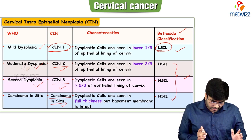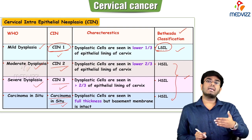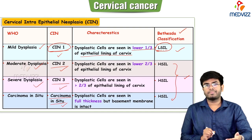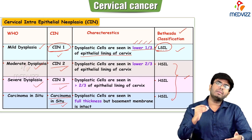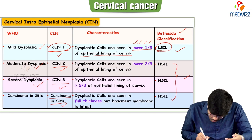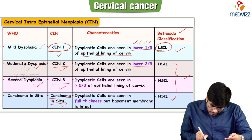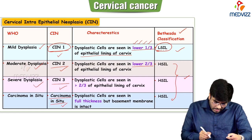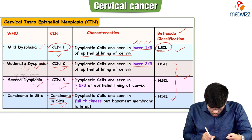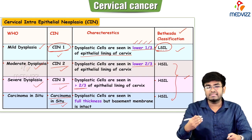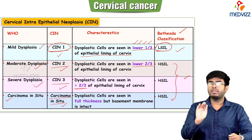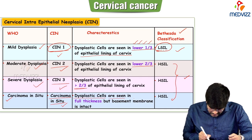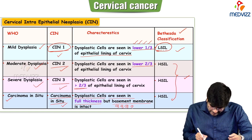In CIN3, the dysplastic cells are seen in more than two-thirds of the epithelial lining of the cervix. In carcinoma in situ, the dysplastic cells are seen in the full thickness of the epithelial lining, but the basement membrane is still intact. Once there is a breach in the basement membrane, you should call it cancer, because these dysplastic cells will now undergo metastasis — it becomes a perfect neoplasia.